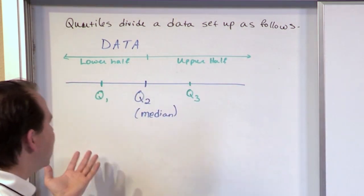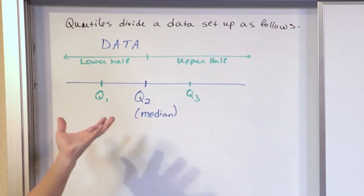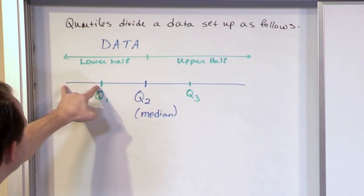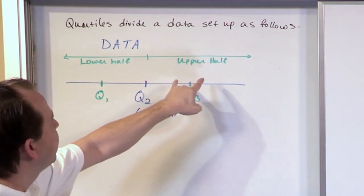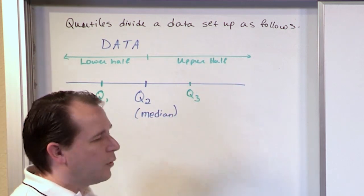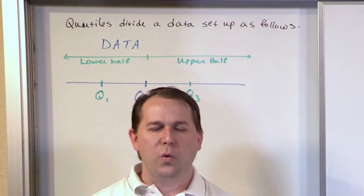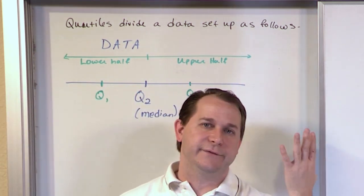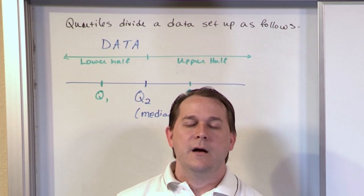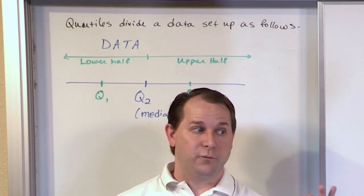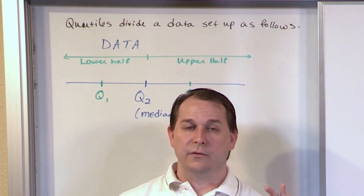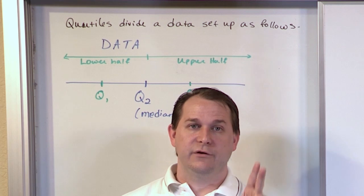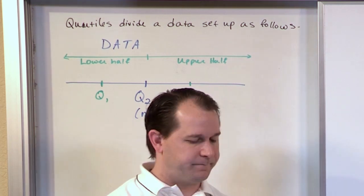So the reason it uses the word quartiles is because here's region number one, region number two, region number three, region number four. So your quartiles do divide your data set into four regions, but in terms of what you write down, you only have three quartiles. There are Q1, Q2, and Q3.